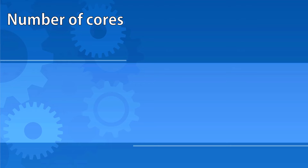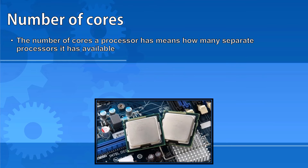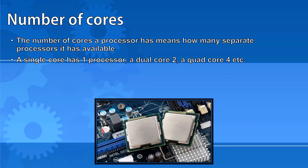The number of cores a processor has means how many separate processors does it have available. A single core means a single processor. A dual core means two processors. A quad core means four processors. Increasingly, machines are being sold with 6, 8, and 10 cores.